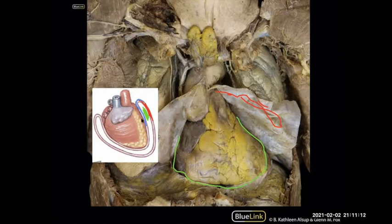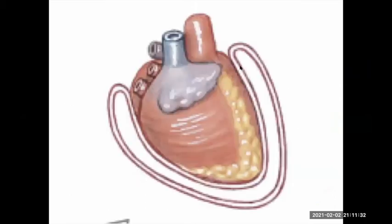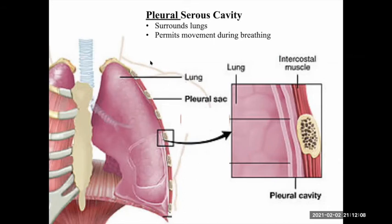Hopefully correlating the cadaver pictures with the diagrams makes it make more sense. So that's the idea behind these serous cavities. You have the pericardial cavity where the heart sits, with fluid-filled space in between. For the pleural cavity, the visceral pleura is attached to the lungs, and the parietal pleura is attached to the rib cage, with the fluid-filled cavity in between. This is important for breathing: when the rib cage expands, the connection between the lungs and the rib cage pulls the lungs outward, expanding them — which you'll get into in the respiratory system.